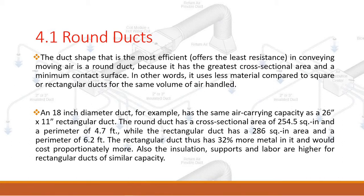The round duct has a cross-sectional area of 254.5 square inches and a perimeter of 4.7 feet, while the rectangular duct has a 286 square inch area and a perimeter of 6.2 feet. The rectangular duct thus has 32 percent more metal in it and would cost proportionately more. Also, insulation, supports, and labor are higher for rectangular ducts of similar capacity.